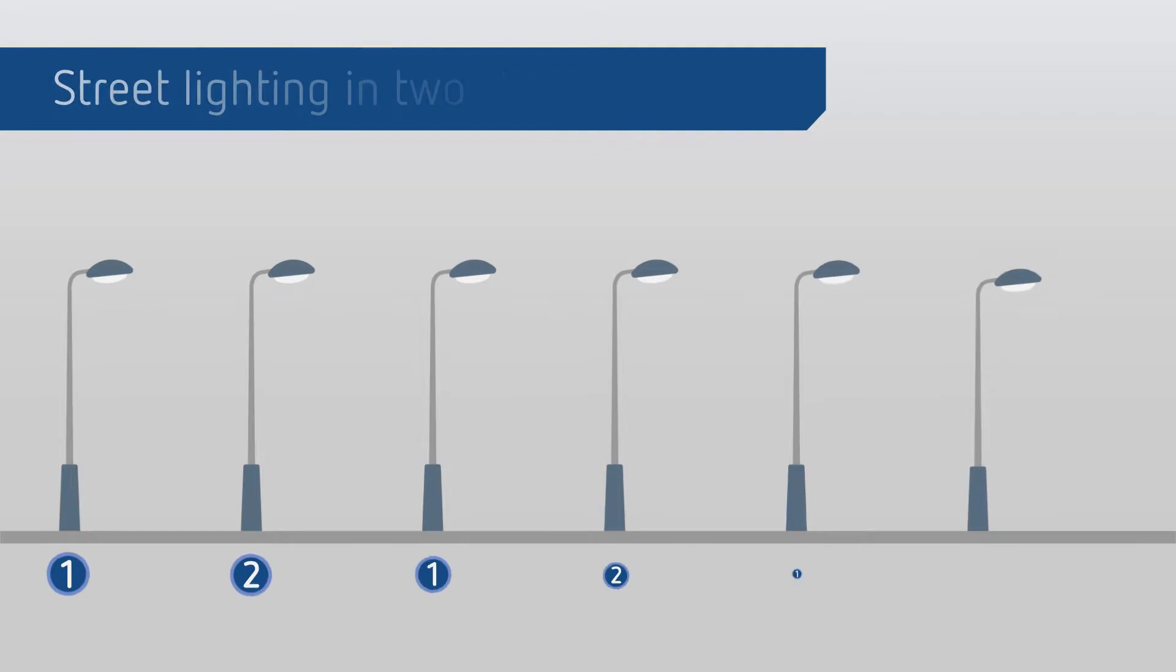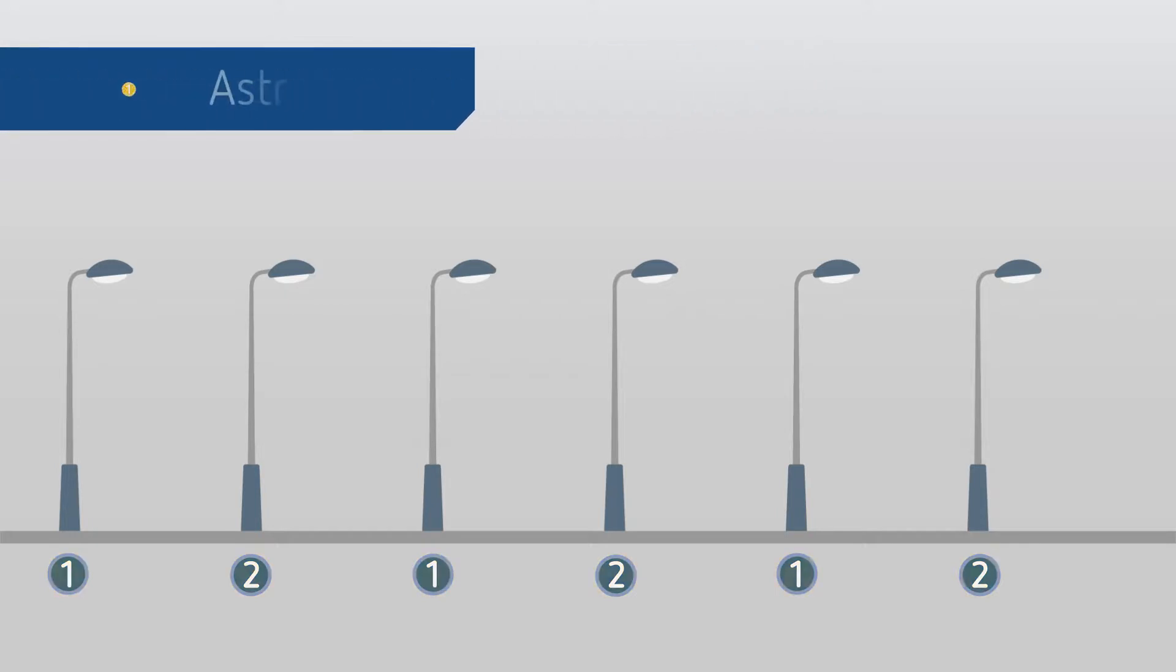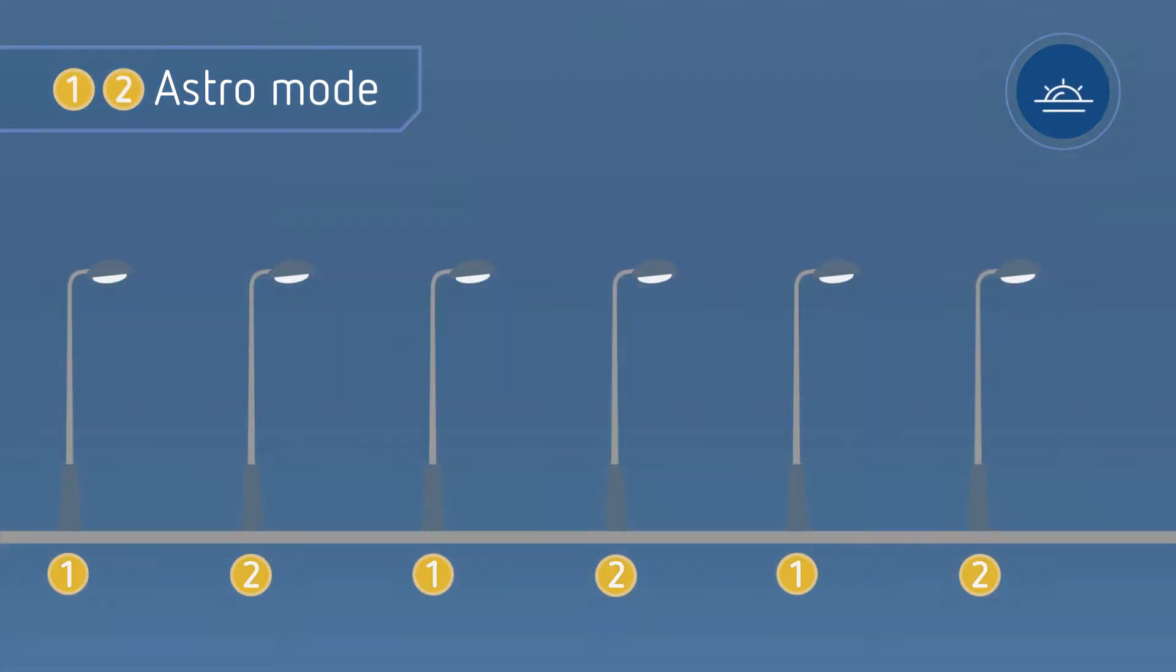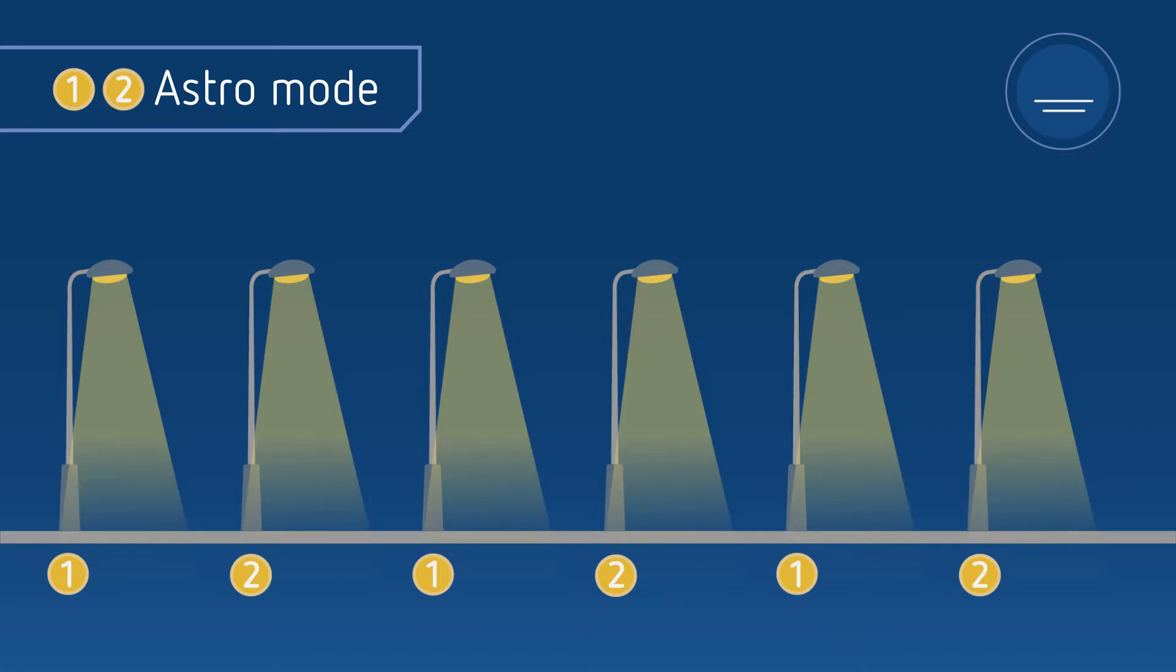When using Selector Top 3 for street lighting, the lamps can be connected to two channels. In astro mode, the lamps of both channels are automatically switched on after sunset.